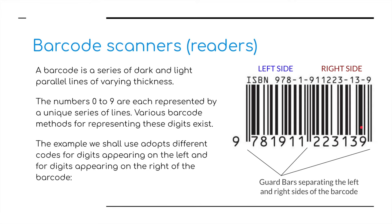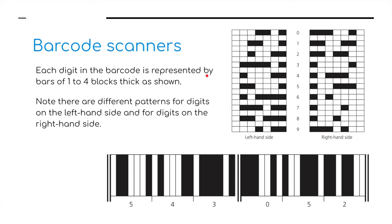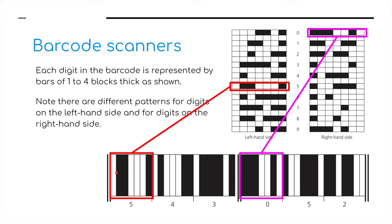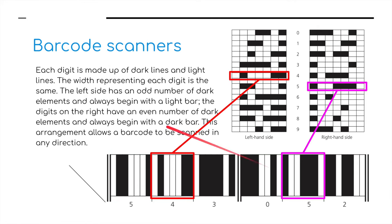Each digit in the barcode is represented by bars 1 to 4 blocks thick. For example, the number 6 has 1 white, 1 black, 1 white, and then 4 black. Note that there are different patterns for digits on the left-hand side and for digits on the right-hand side. For example, the number 5 on the left is 1 white, 2 black, 3 whites, and black, whereas the number 0 is 2 whites, a black, and a white. Each digit is made up of 7 characters. The left side has an odd number of dark elements and always begins with a light bar, while the right-hand side always begins with a dark bar. This is so it can be scanned in any direction.